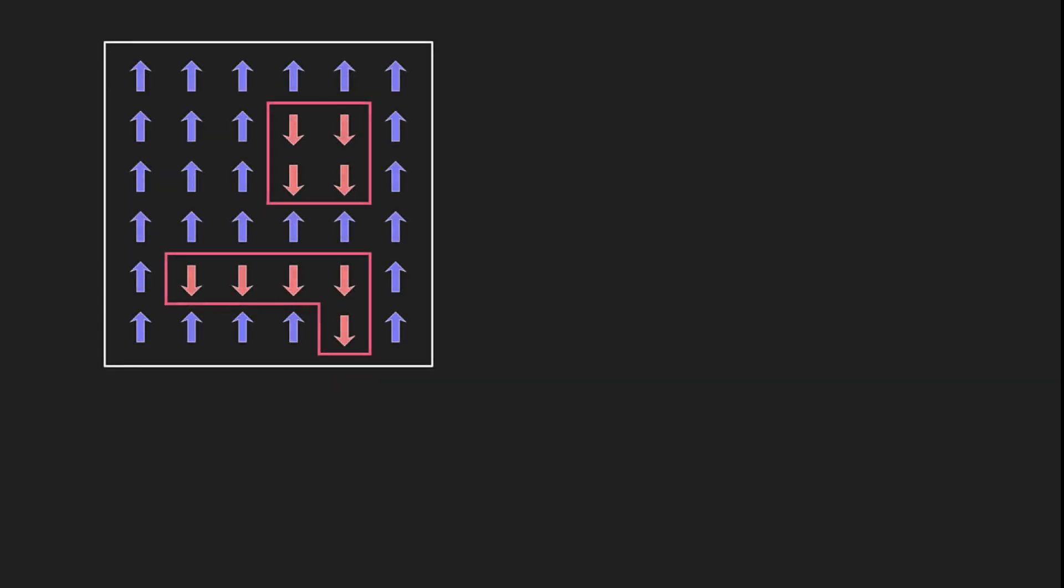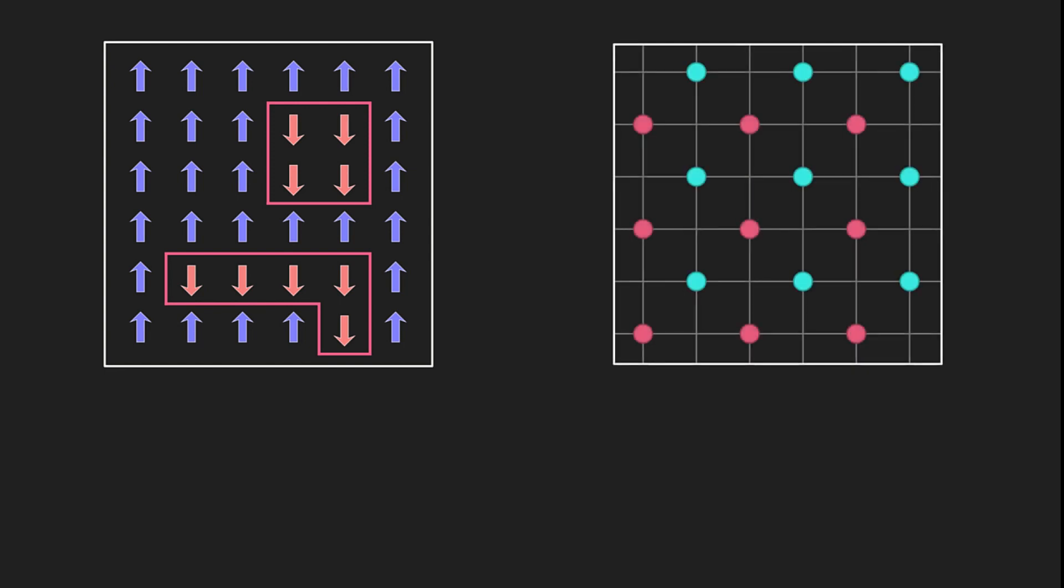This video will explore the unexpected relationship between counting polygons, graph duality, and the critical temperature of the 2D Ising Model.